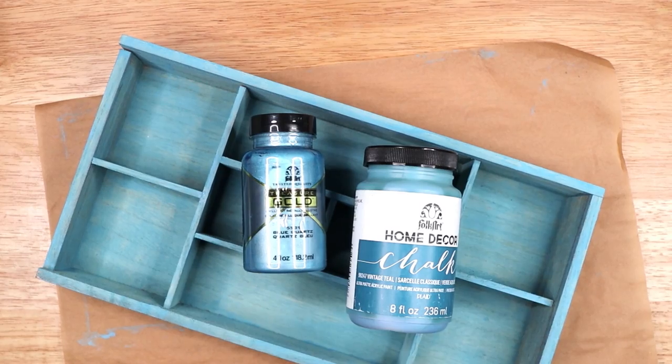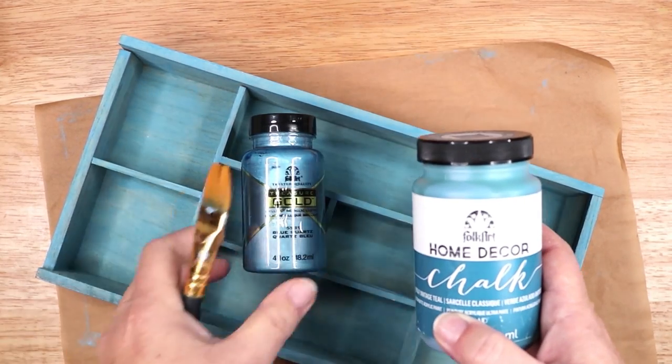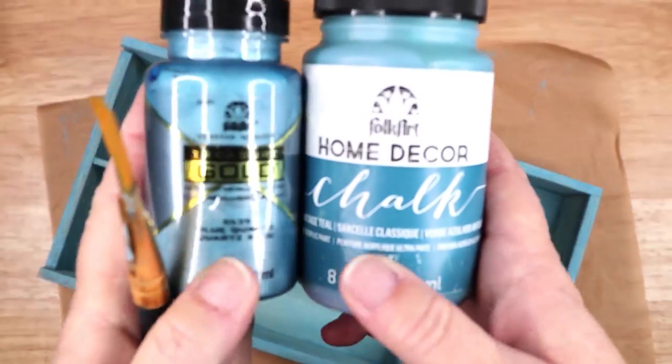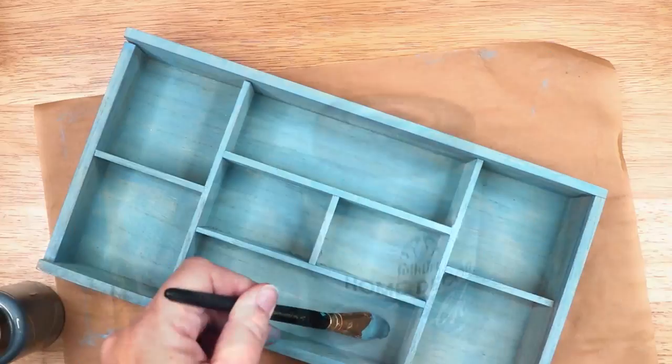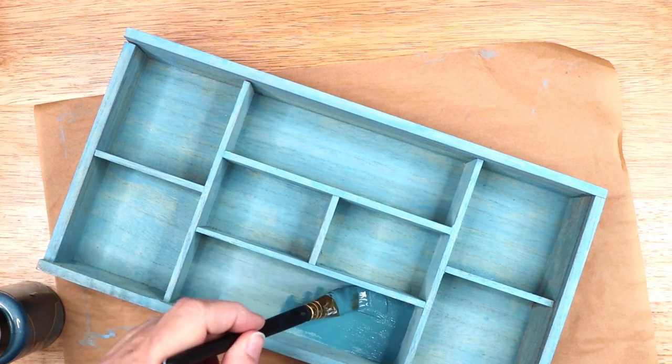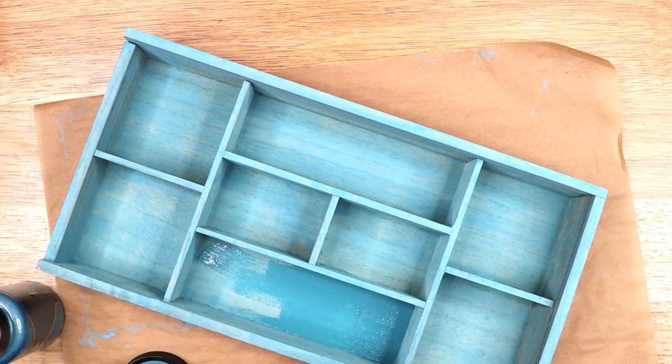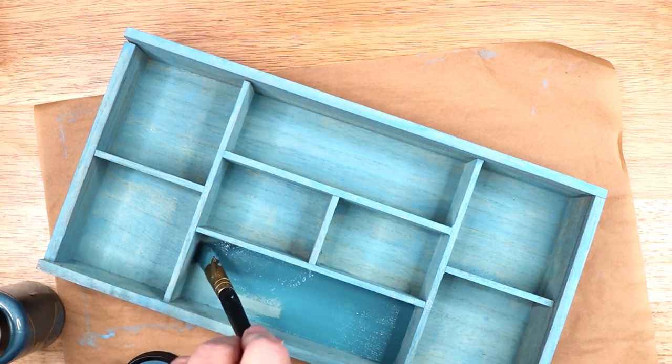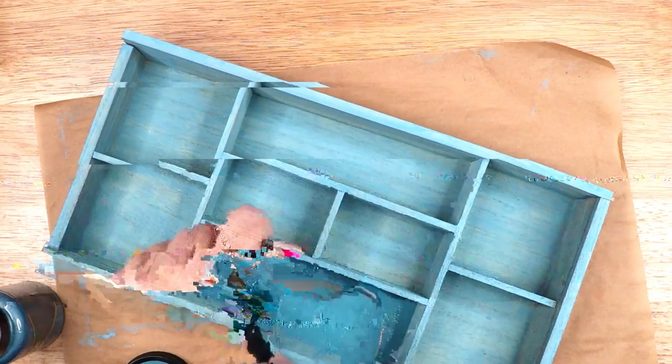Once the entire box was painted and dry, I went back in with two other blue colors: a metallic blue paint and a blue chalk paint. I thought it might be fun to change up the paint in a few of the squares to add variety and interest. I used the chalk paint in two squares and the metallic paint in two squares, leaving four squares the original blue wash.